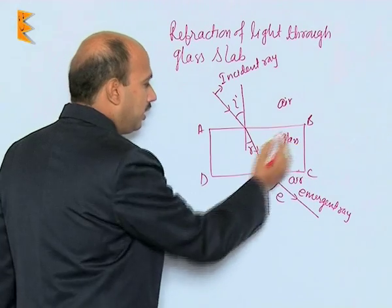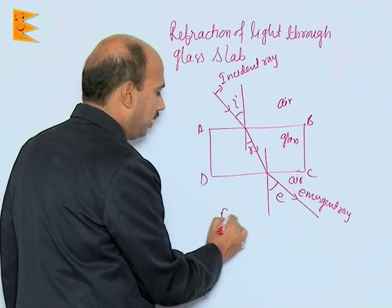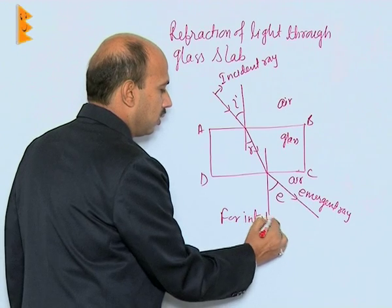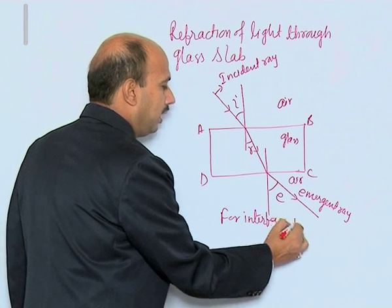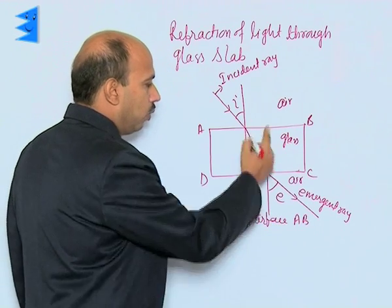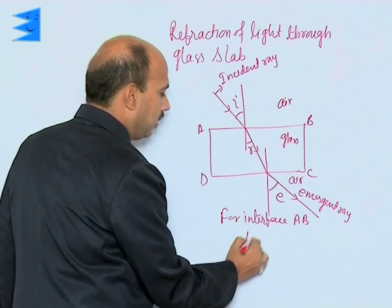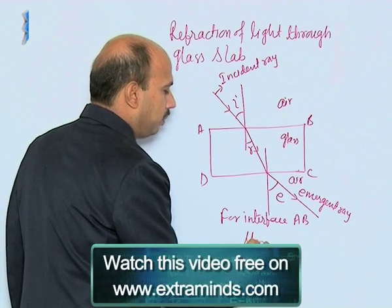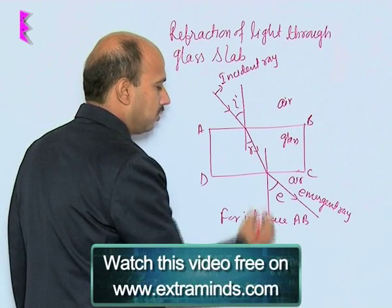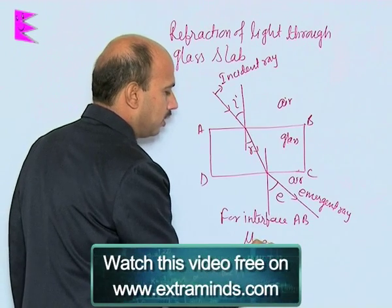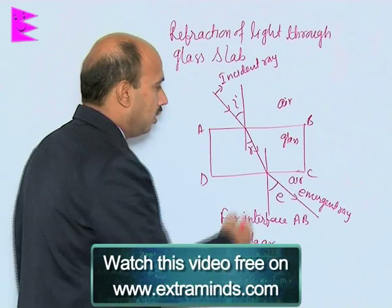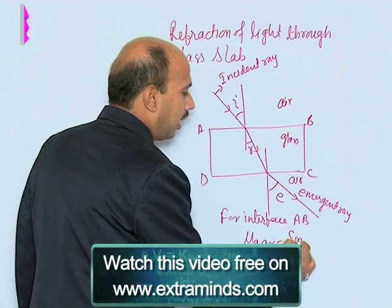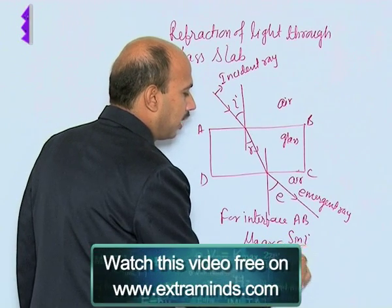For interface AB, we can write the refractive index of glass with respect to air — that is mu G — as sin I upon sin R.